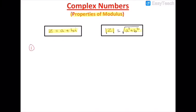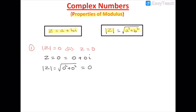Our first property is: |z| = 0 if and only if z = 0. To prove this, let z = 0, which can be written as 0 + 0i. Then |z| = √(0² + 0²) = 0. Therefore, |z| = 0 if and only if z = 0.